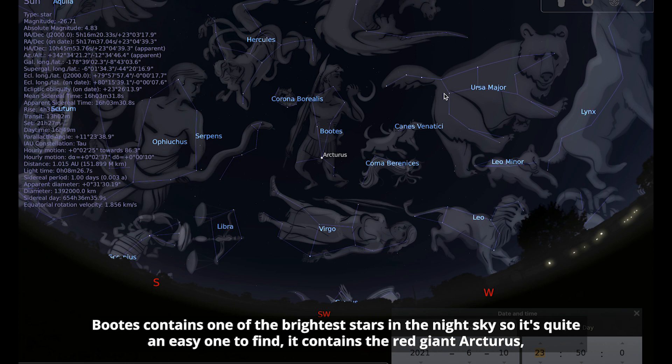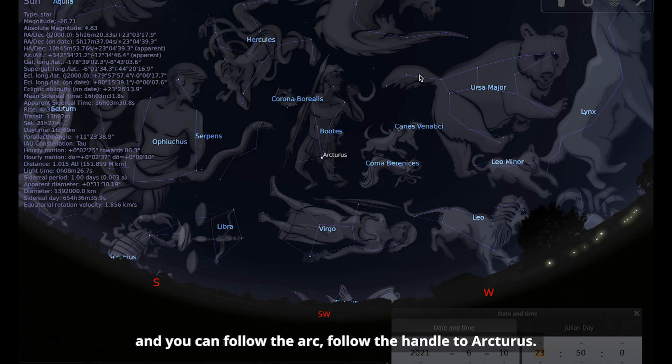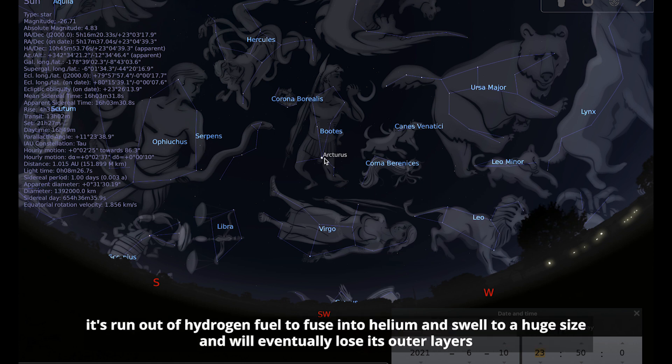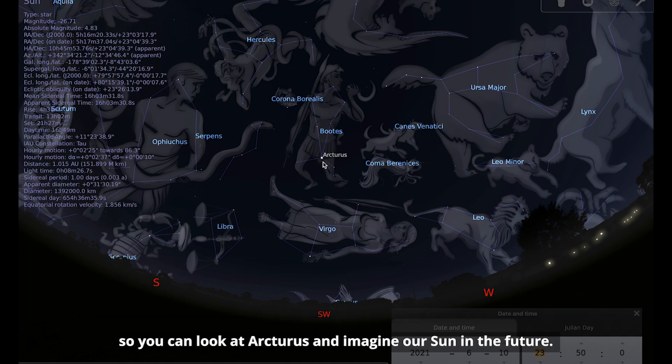Bootes contains one of the brightest stars in the night sky so it's quite an easy one to find. It contains the red giant Arcturus. You can use the familiar shape of the plough to help you find that. So here we have the plough or the Big Dipper and you can follow the arc, follow the handle to Arcturus. And Arcturus is a red giant star in the final stages of its life. It's run out of hydrogen fuel to fuse into helium and swelled to a huge size and will eventually lose its outer layers leaving behind a tiny white dwarf star. This is the exact same fate that we can expect for our own sun in about 5 billion years' time. So you can look at Arcturus and imagine our sun in the future.